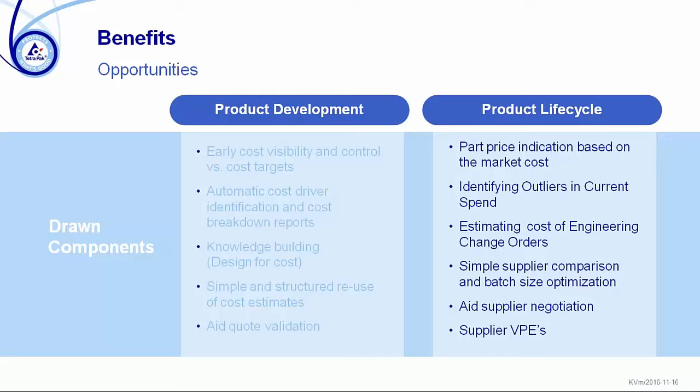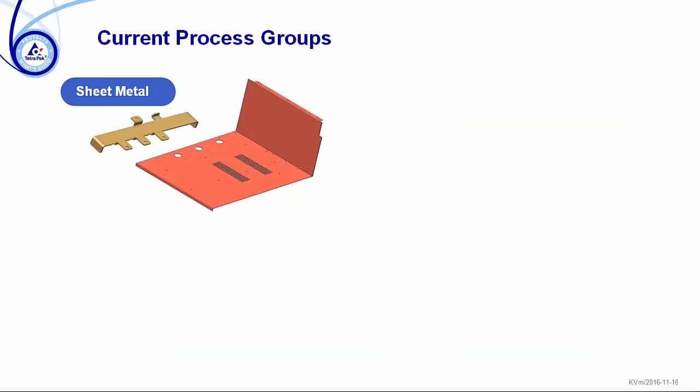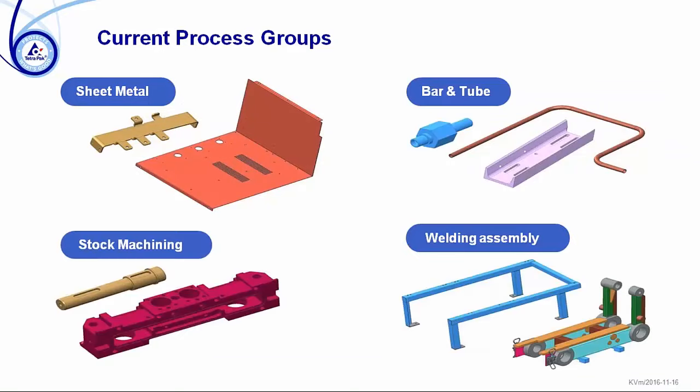The major benefit as I see it is really the cost awareness and understanding of what drives cost. For the engineer, I see the delta between the existing and the new design as the major benefit to focus on — not the absolute figures. For supply chain, understanding the real should cost is more important. The processes we use today in aPriori are sheet metal, bar and tube stock machining, and welding assemblies. Those represent the highest portion of our machines and where we really see the big use of the tool.